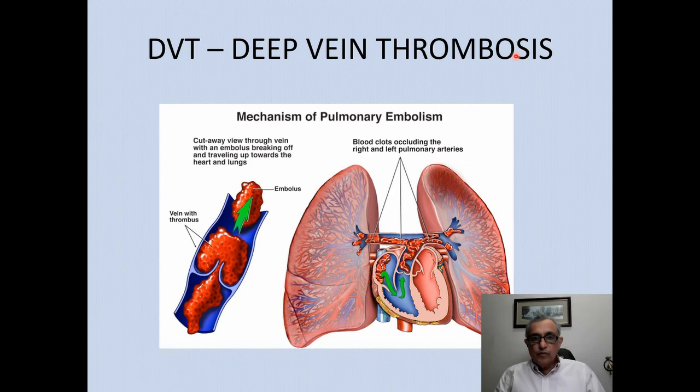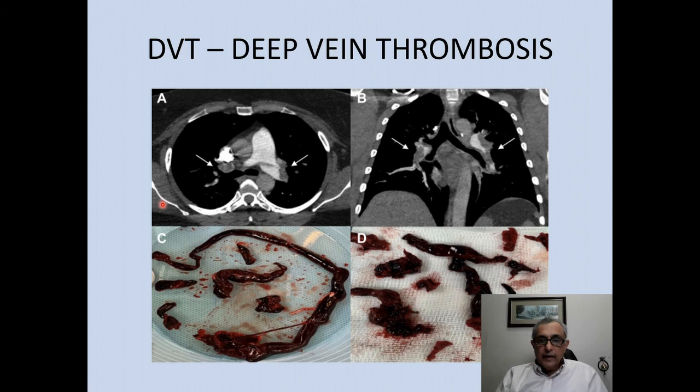Another common complication is deep vein thrombosis, where clots develop within the veins of the leg and thigh, then break away and end up in the lungs as pulmonary emboli. On CT scan, you can see clots in the pulmonary artery appearing as black areas, with the patent pulmonary artery showing white contrast media. This is what the clots look like once surgically removed.